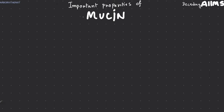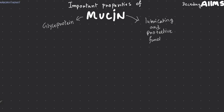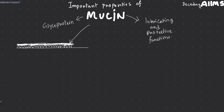Mucin is basically a glycoprotein which has various lubricating and protecting functions. Mucin is found over epithelial cells — the cells over the basement membrane — and mucin creates a protective layer above these cells, forming a mucin layer.